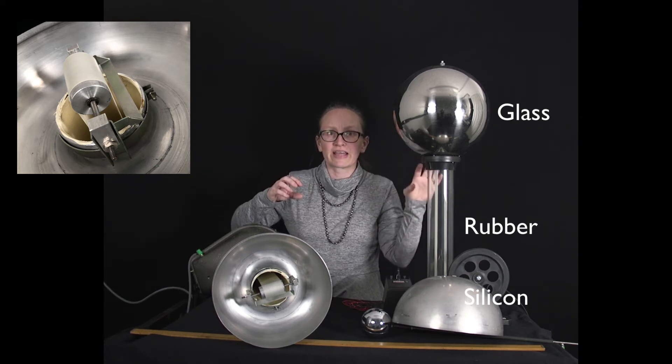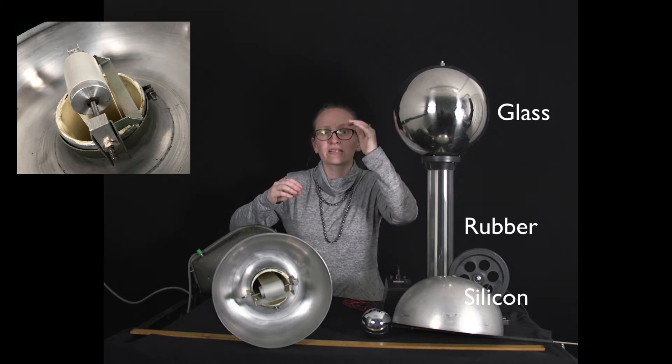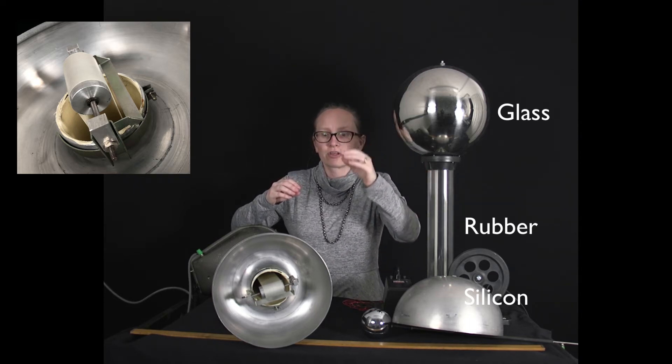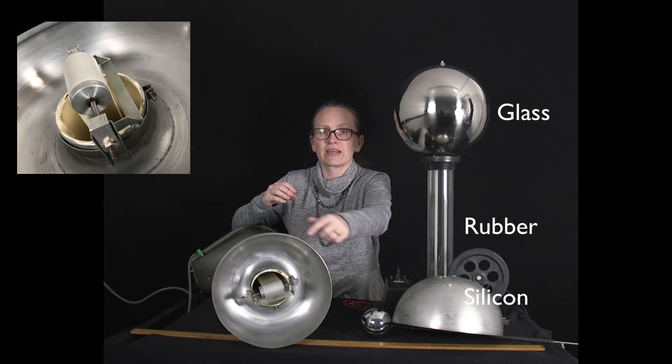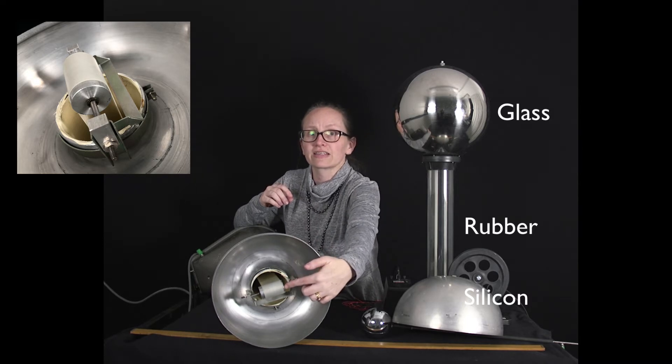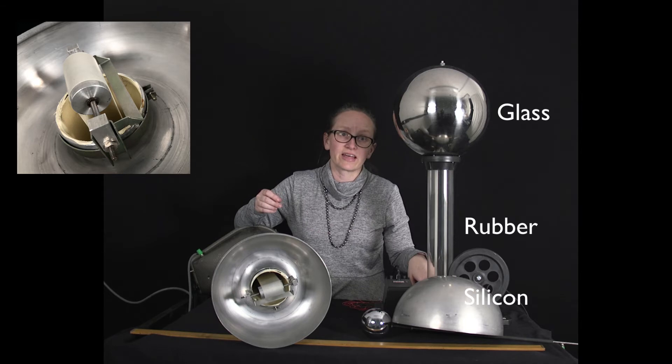When rubber rubs against glass, because glass is higher than rubber, the glass becomes positive. Essentially what the rubber roller is doing is removing electrons from the glass up the top and taking them down to the silicon down the bottom.